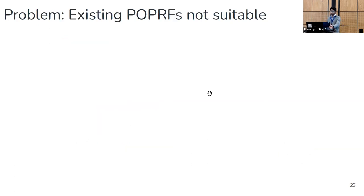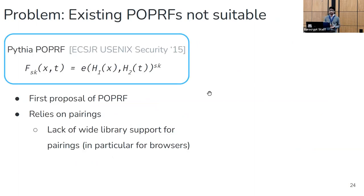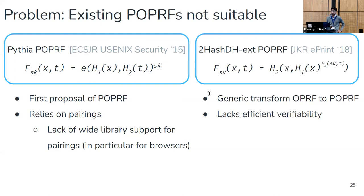Taking this motivation, we looked at existing proposals for POPRFs. Pythia was the first proposal for a POPRF, proposed in the context of password hardening, but it uses pairings. When chatting with practitioners about deploying Pythia, it became clear that this use of pairings was a large barrier, particularly the lack of wide library support in cryptography libraries for the web browser. The only other proposal is a general transform that converts any OPRF into a POPRF by generating a per-tag OPRF secret key using a PRF evaluated on the tag. Unfortunately, this transform doesn't provide efficient verifiability — the server would have to prove correct evaluation of this hash H3, likely requiring more expensive general circuit-based proof systems.